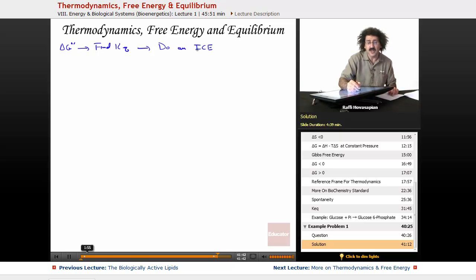ICE just means initial, change, equilibrium - one of those charts that we used to do in general chemistry to track where things start, where they end up, and then do the calculation based on the Keq. Let's go ahead and do that.